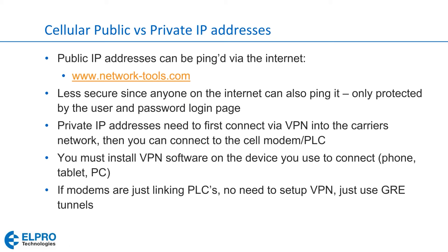Carriers usually have a small charge for VPN software usage. One carrier allows three VPN devices and charges $24 a month for those three devices to access their network. But if we're just connecting PLCs together, there is no need to use a VPN — we can just use GRE tunnels.